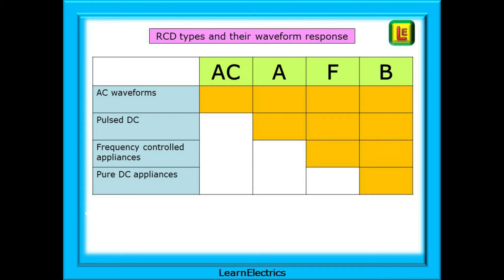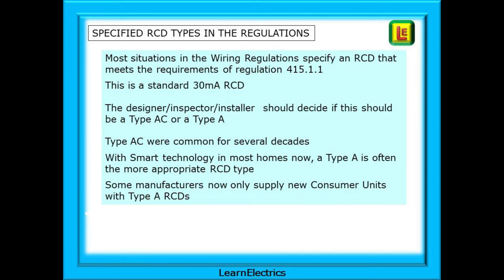With the advent of green energy saving and smart technology, and with so many household appliances and lighting circuits interacting with the user, there are many types of signals being generated within the installation — no longer is it a simple, smooth AC waveform. Most situations in the wiring regulations will specify an RCD that meets the requirements of regulation 415.1.1, which is a standard 30mA RCD. The designer, inspector or installer, however, should decide if this should be a type AC or a type A. Type AC were common for several decades, and with smart technology in most homes now, a type A is often a more appropriate RCD type — some manufacturers now only supply new consumer units with type A RCDs.